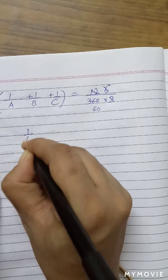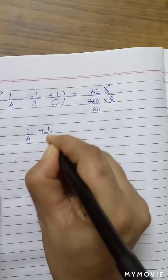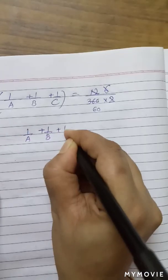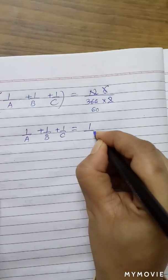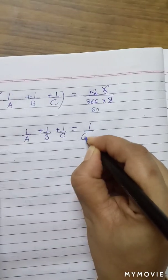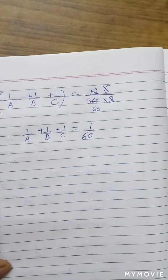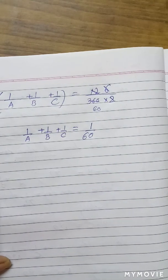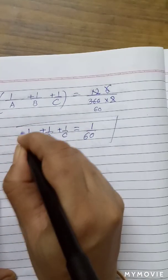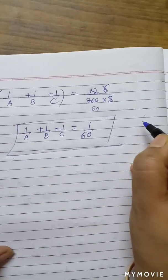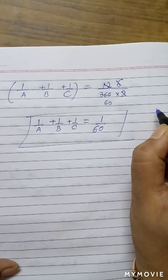We conclude that 1/A + 1/B + 1/C = 1/60, which means if A, B and C work together, they will complete the work in 60 days. So in one day, together they are going to do 1/60th part of the work.